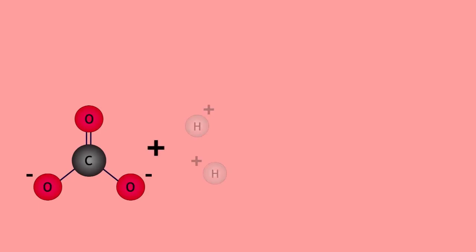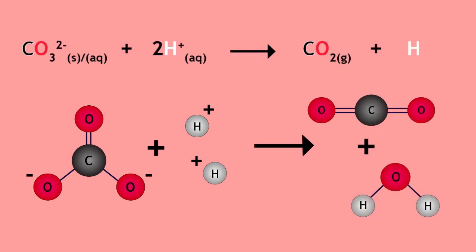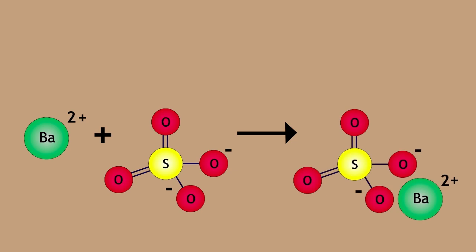Carbonate ions react with acid to produce carbon dioxide gas and water. Barium ions and sulfate ions combine to produce a barium sulfate precipitate.